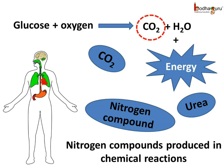Urea, uric acid, and a few other compounds of nitrogen are the main wastes produced inside our body. Urea is the combination of carbon dioxide and ammonia. It is very harmful for the body, hence it has to be eliminated from the body through urine.